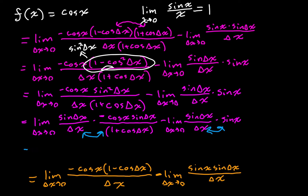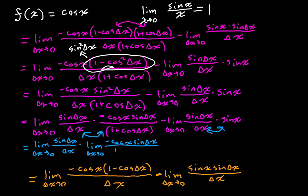So now we have this equal to: the limit as delta x goes to zero of sine delta x over delta x — which should look familiar — times the limit as delta x goes to zero of negative cosine of x times sine of delta x divided by 1 plus cosine of delta x, minus the limit as delta x goes to zero of sine of delta x divided by delta x, times the limit as delta x goes to zero of sine of x.